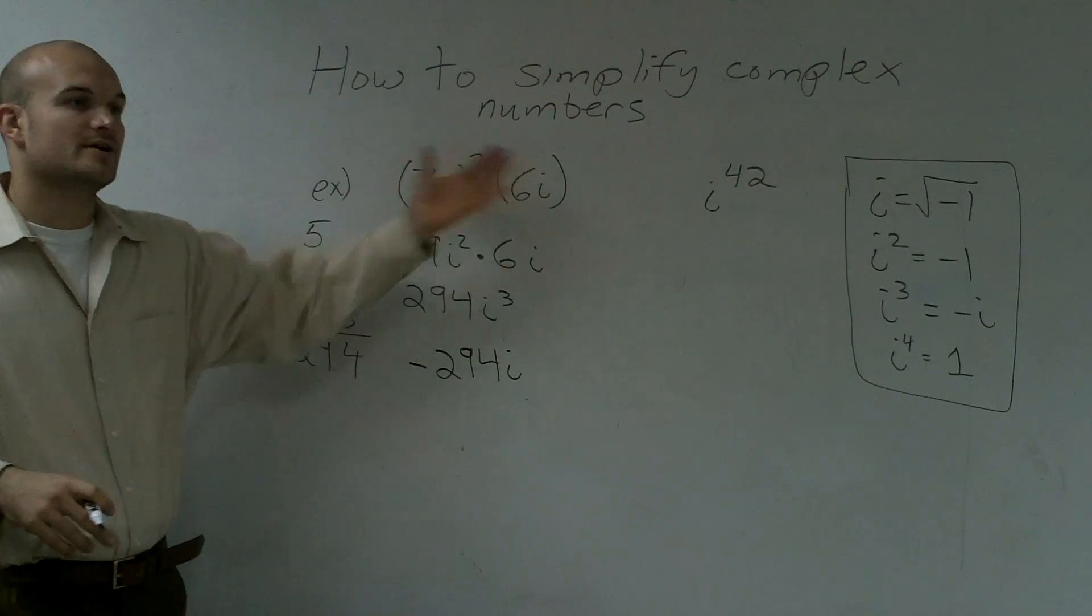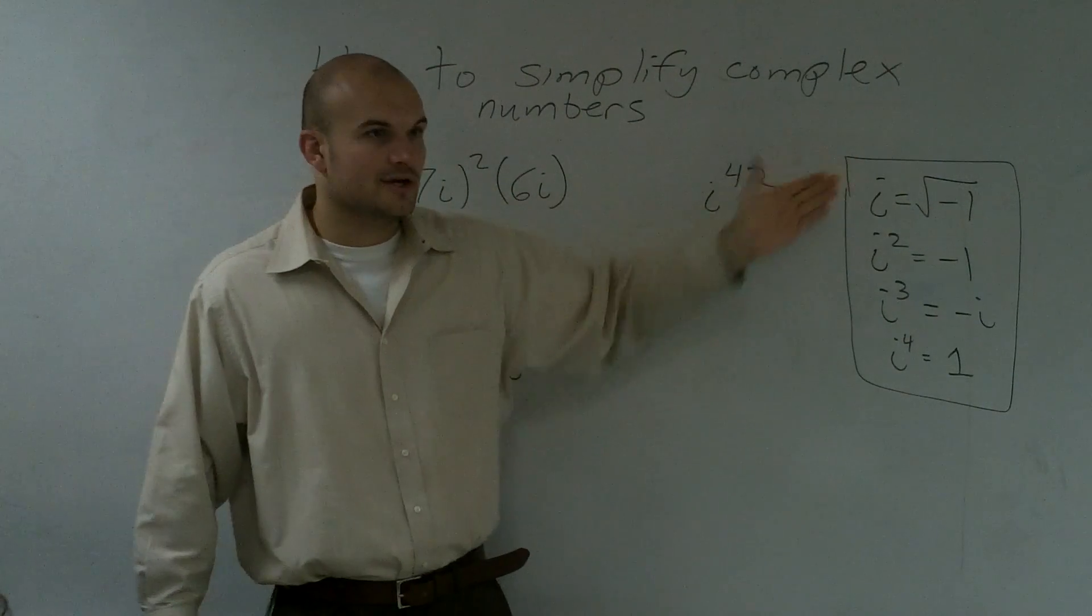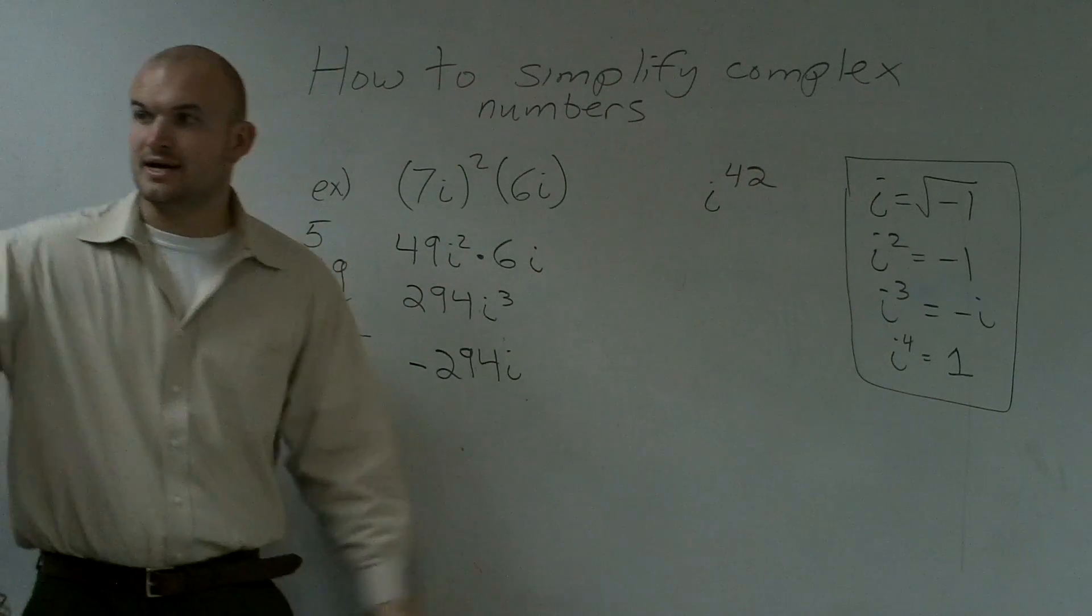Alright, so just multiply your numbers, and then you multiply your i's, and then all you've got to do is, once you're done with them, you figure out what your final value is for your i, and you solve it.